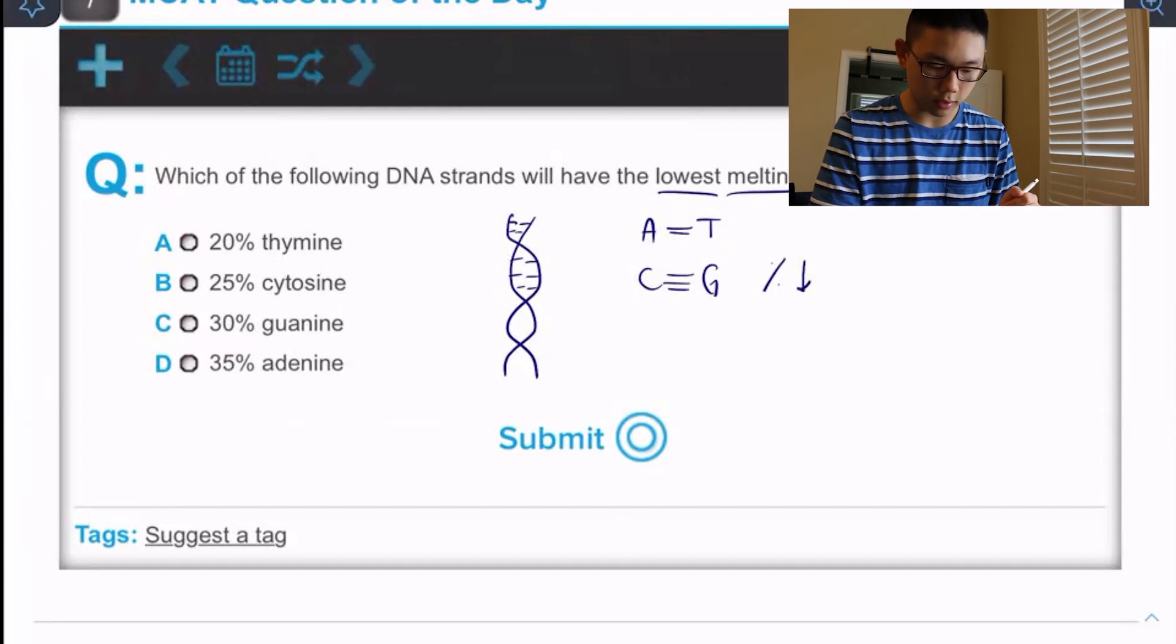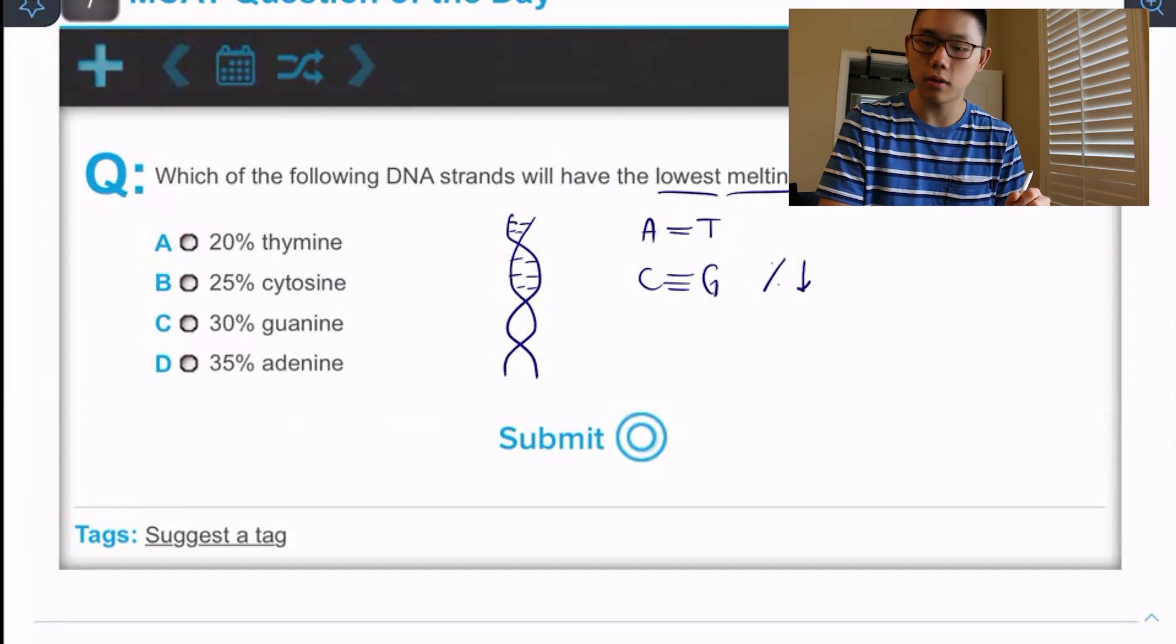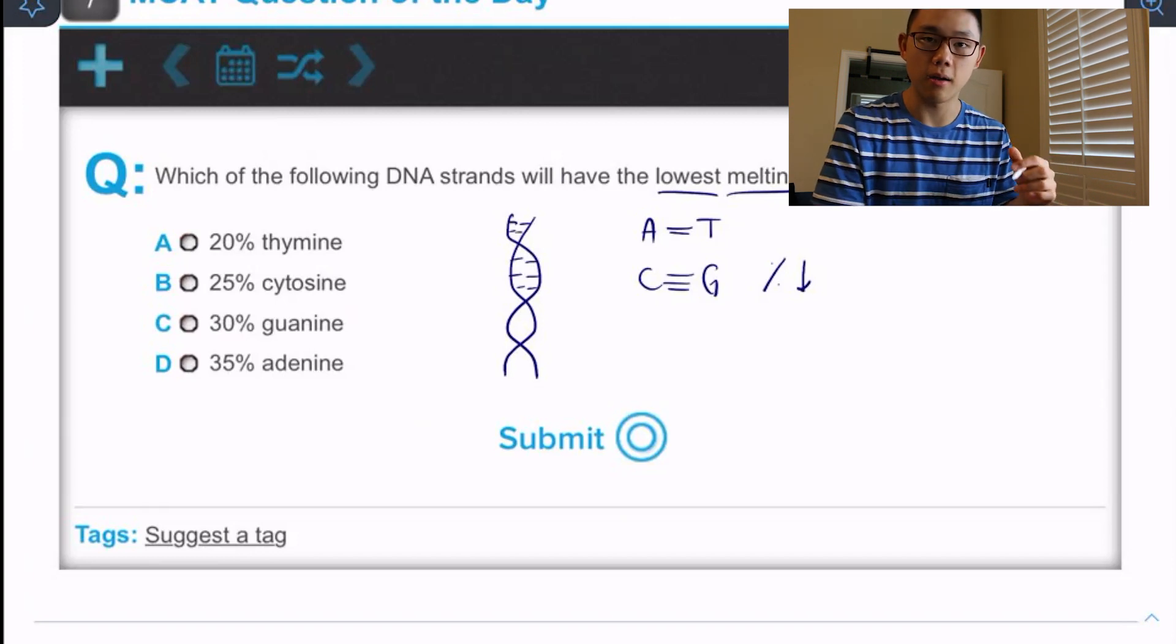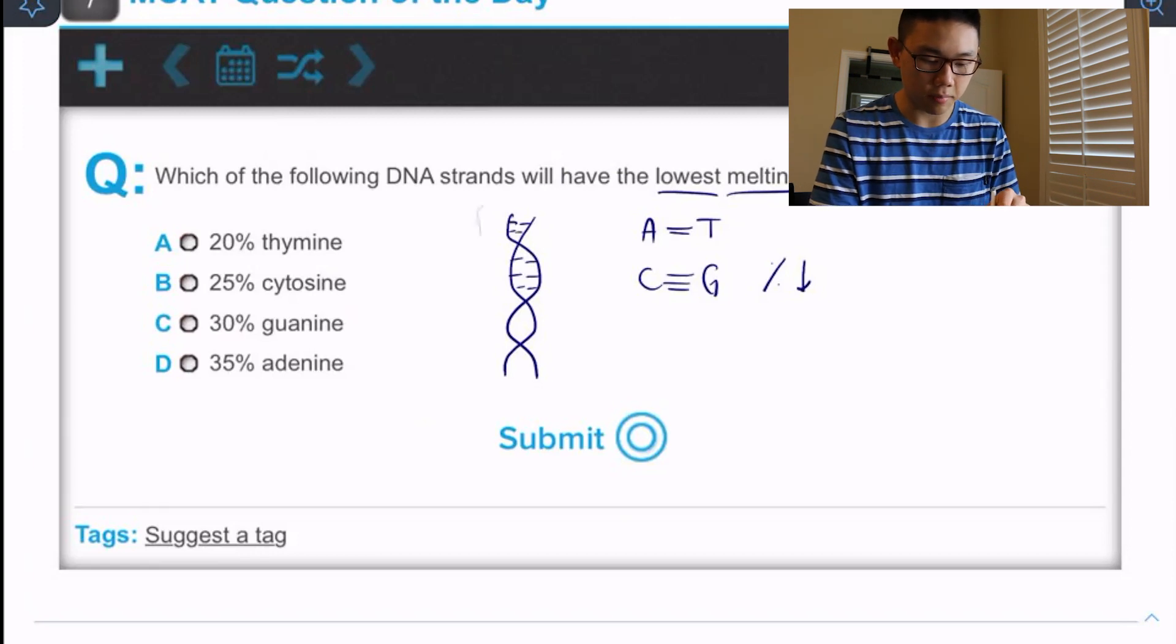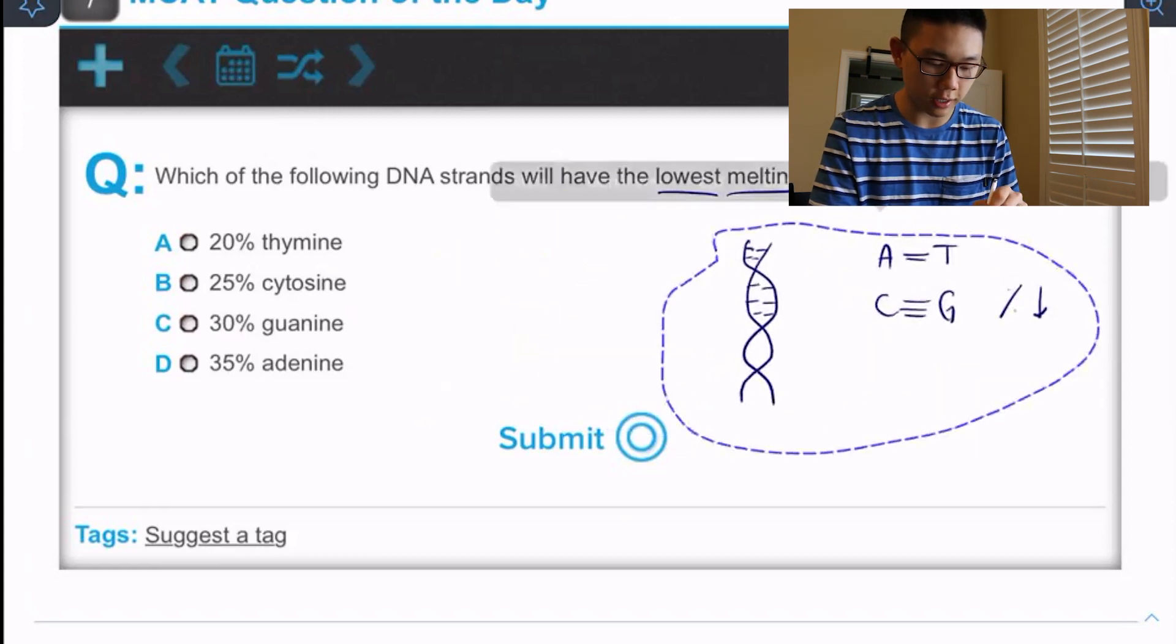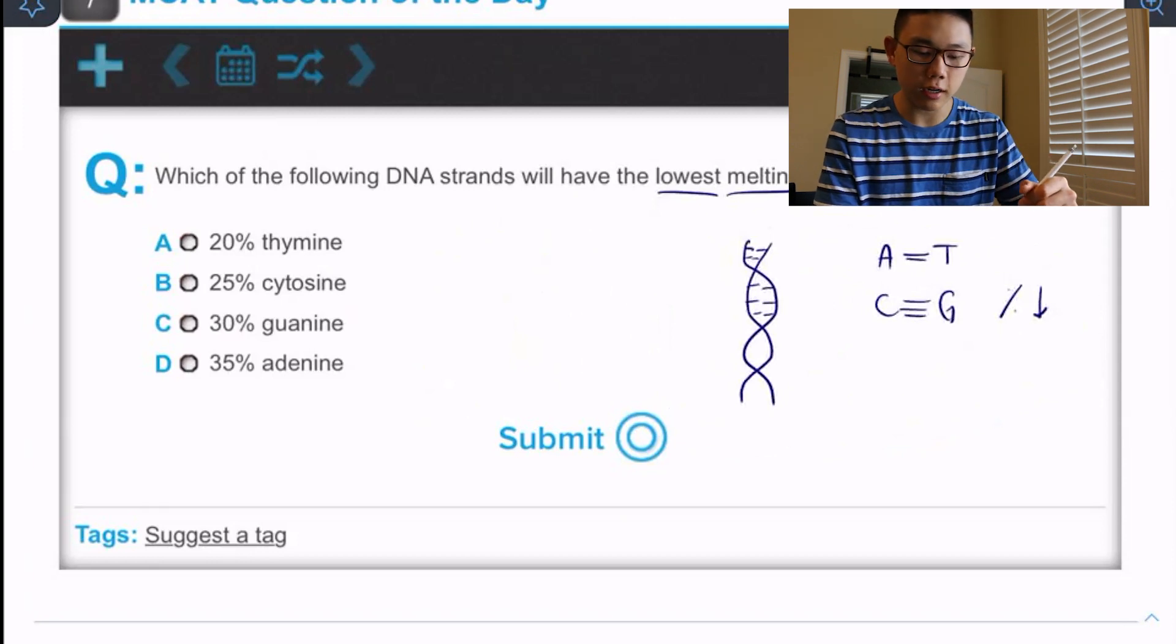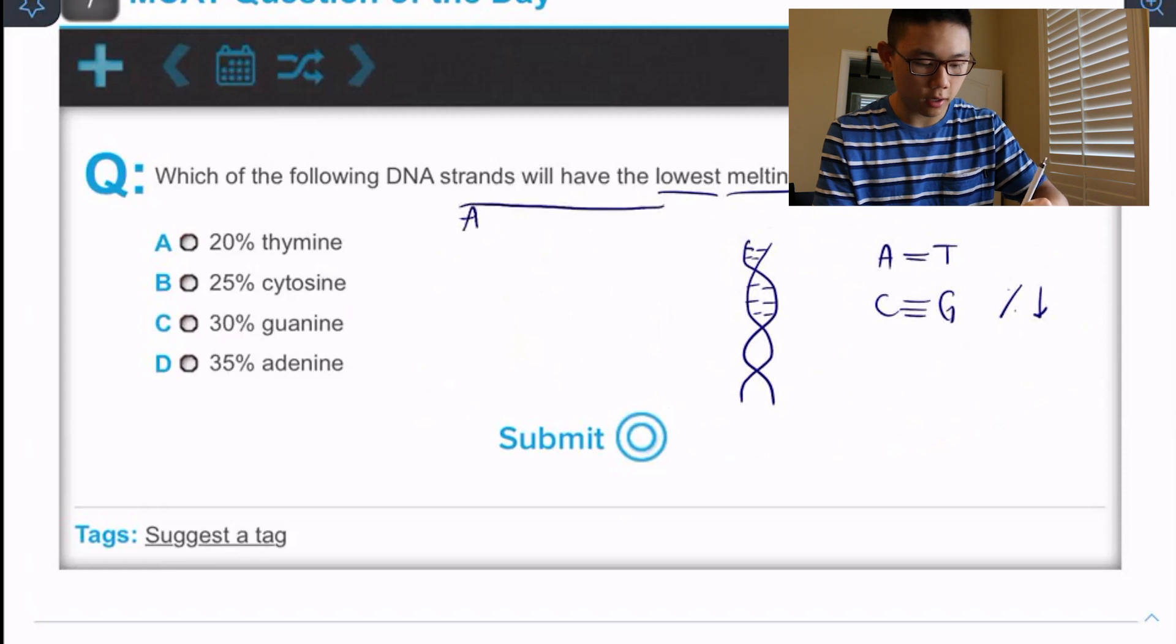Okay. So now let's look at the answer choices and what information they give us. So 20% thymine, well, that doesn't really tell us about the relative proportions of C G and A T base pairing, but it actually kind of does because if we remember that for every A nucleotide on one strand, there's going to be a T nucleotide on the other strand, right?